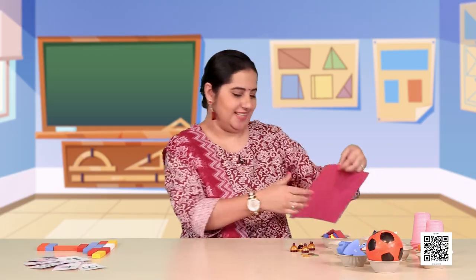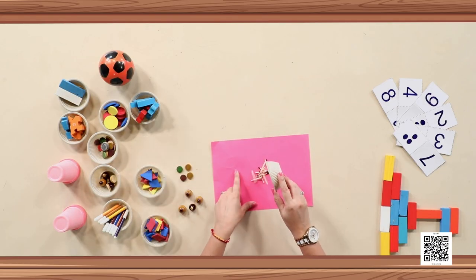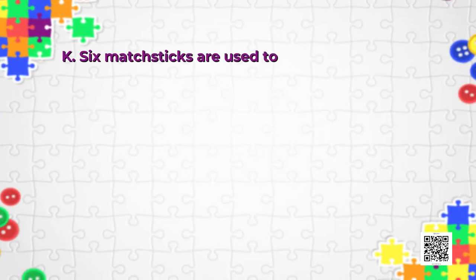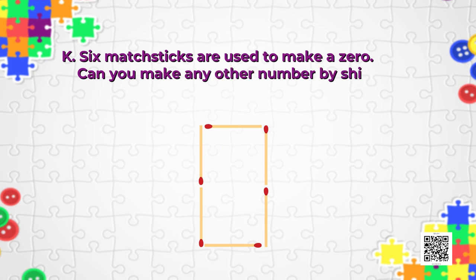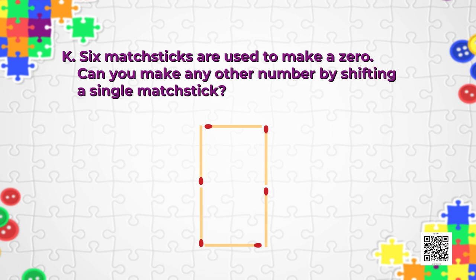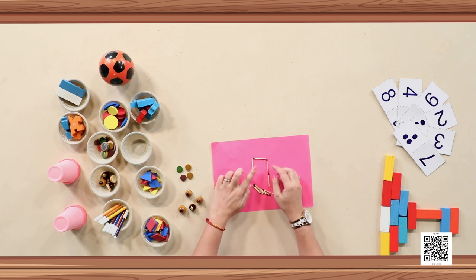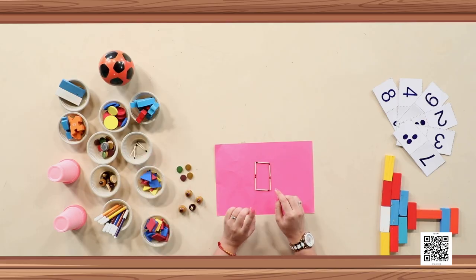After that interesting previous puzzle, it's time for Puzzle K. For this we are going to need some matchsticks. You have seen fire being created using matchsticks, but today we are going to make some numbers with them. The question is: six matchsticks are used to make a zero. Let's first make a zero — and my zero is ready using six matchsticks.